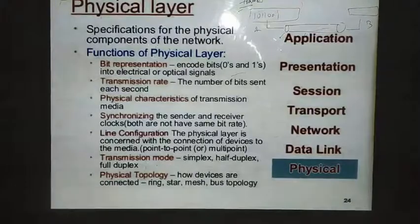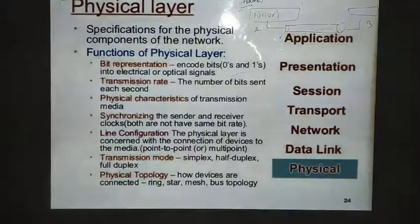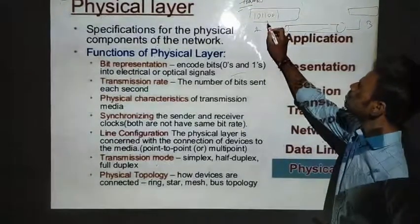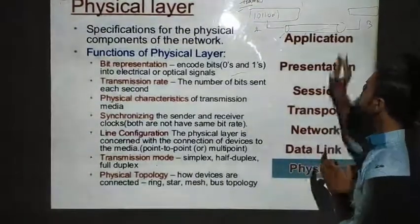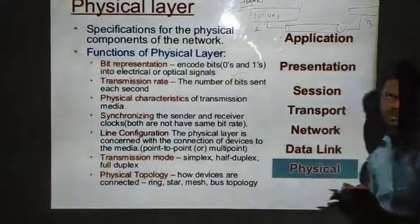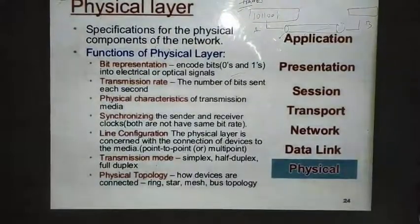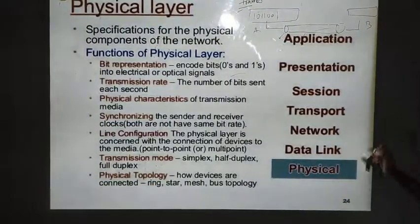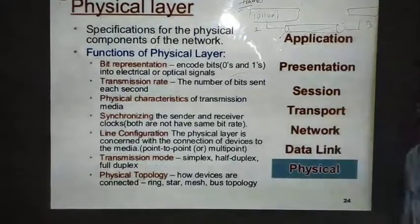The physical layer defines the characteristics of the interface between the transmission medium and itself. Whenever we connect with a transmission medium — whether we are using optical wire or any other medium — the characteristics of that transmission medium will be defined by the physical layer.